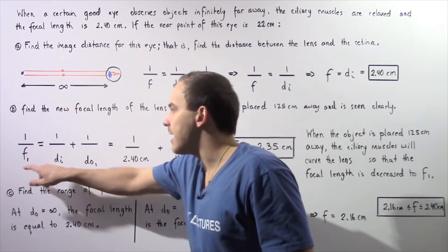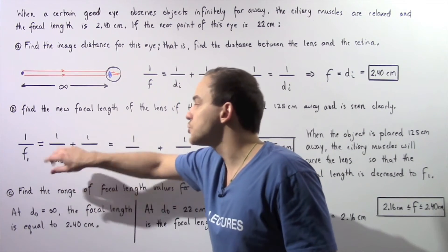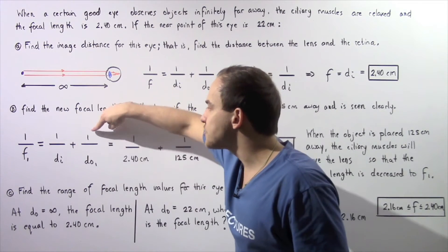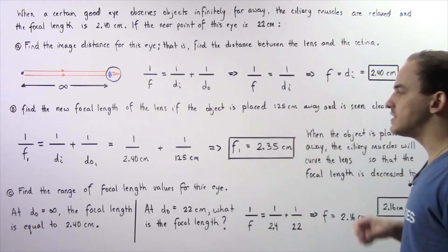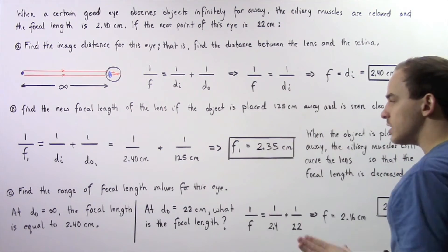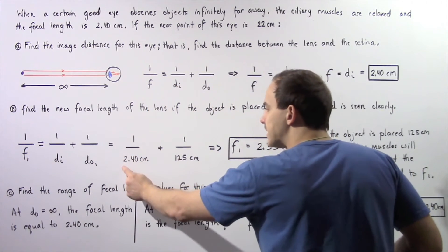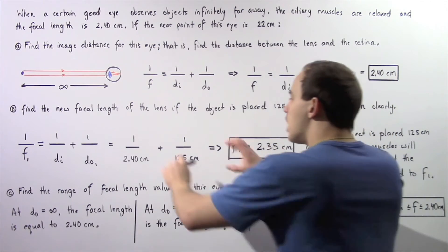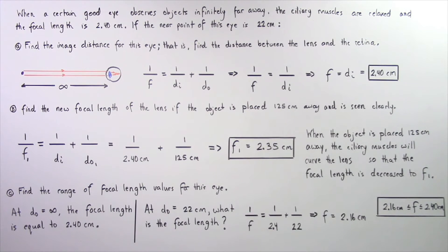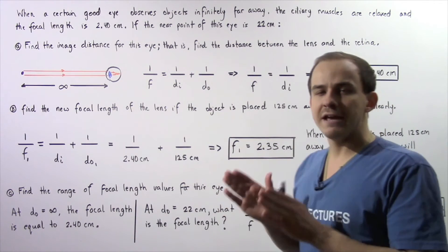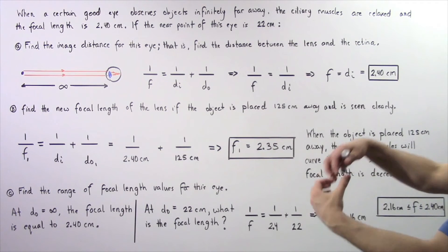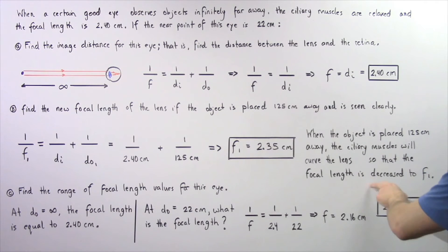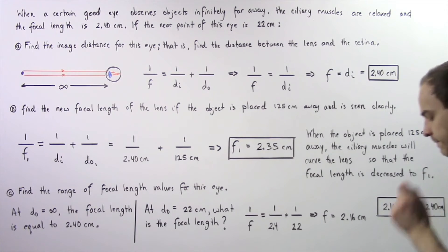1 divided by the new focal length f1 equals 1 divided by the image distance, which remains constant and which we found in part A, plus 1 divided by the new object distance. This is no longer infinity, but equals 125 centimeters. So, 1 divided by f1 equals 1 divided by 2.4 plus 1 divided by 125. Adding these and solving, the new focal length f1 is equal to approximately 2.35 centimeters. Notice, when the object is placed 125 centimeters away from the lens, the ciliary muscles contract and curve the lens so that the focal length decreases from 2.4 centimeters to 2.35 centimeters.